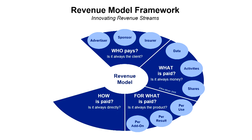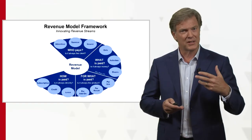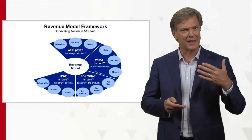The fourth question is: how is the payment actually taking place? Is it always directly, or maybe the product or service is being leased? Maybe you're getting it on credit. Maybe we want to go for a subscription. Again, something that we want to play around with.